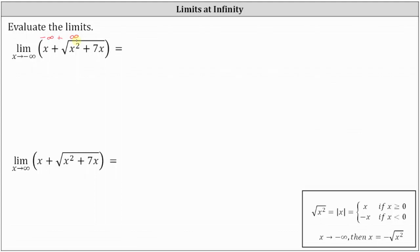We'll have to perform algebra on the function to determine the limit. We'll write the expression as a fraction with denominator of one and then multiply the numerator and denominator by the conjugate, which is x minus the square root of the quantity x squared plus 7x.